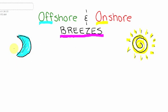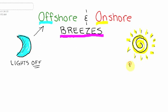When you're looking at nighttime, the lights at night are off. So that will help us remember when we see offshore breezes. And in the daytime, the lights are on, and that's going to help us remember onshore breezes.